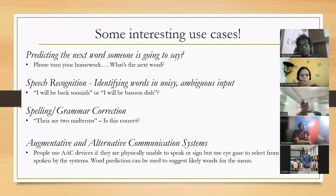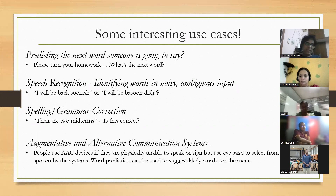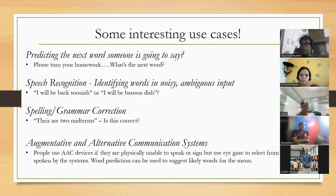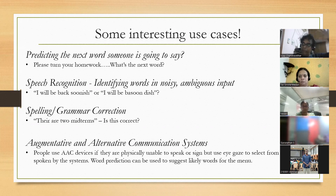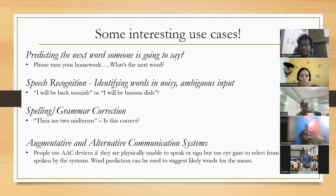Augmentative and alternative communication systems — for people who may have challenges speaking or are unable to speak. Using eye gaze or certain other motion, the system gives a list of words that you can pick and choose from, and then allows you to communicate. This is another use case.